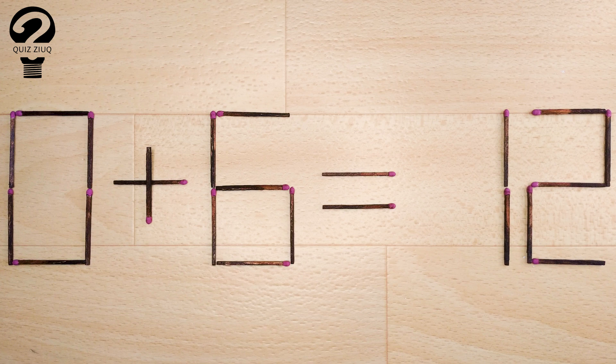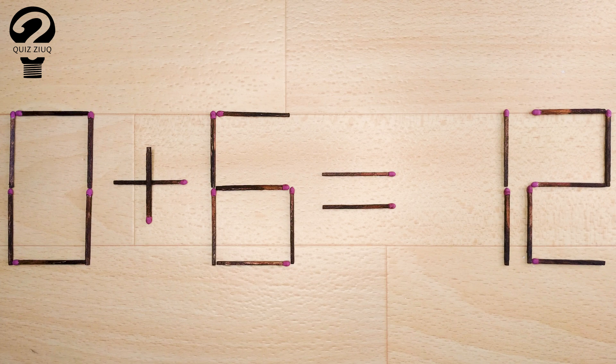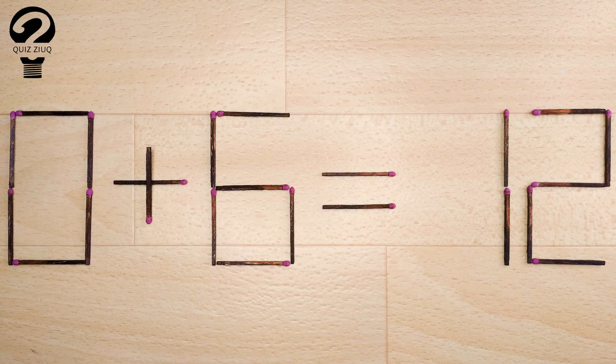Here's the next puzzle. We have the following equation: 0 plus 6 equals 12. Our equation is incorrect. We need to move one matchstick to make our equation correct.